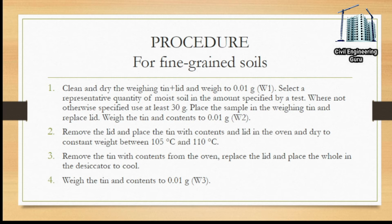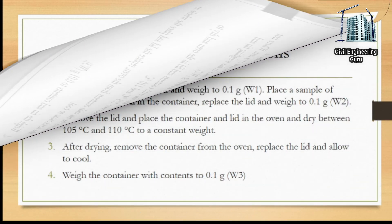Remove the lid and place the tin with contents and lid in the oven. Dry to constant weight between 105°C and 110°C. Remove the tin from the oven, replace the lid, and place in the desiccator to cool. Weigh the tin and contents to 0.01 grams (W3).